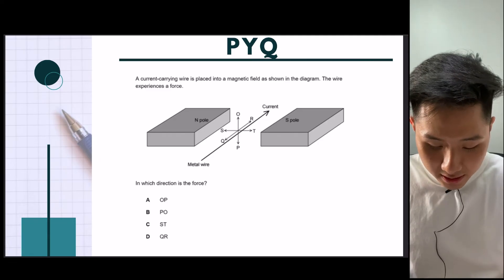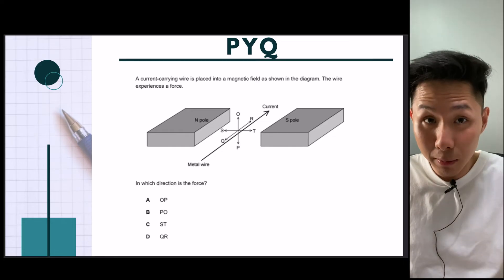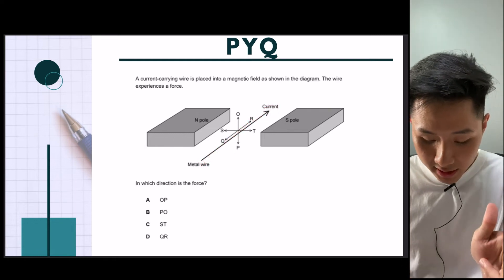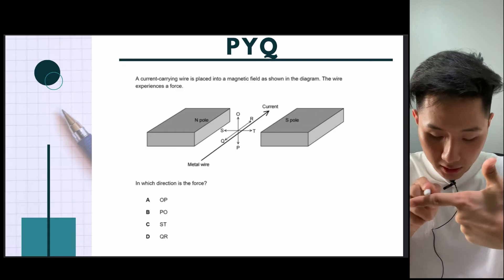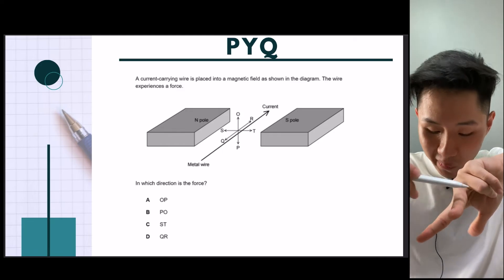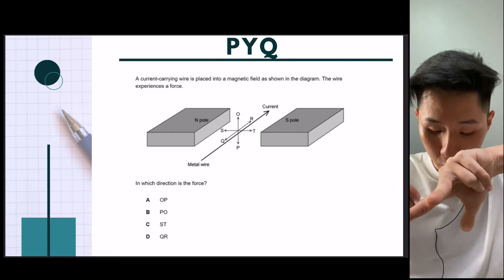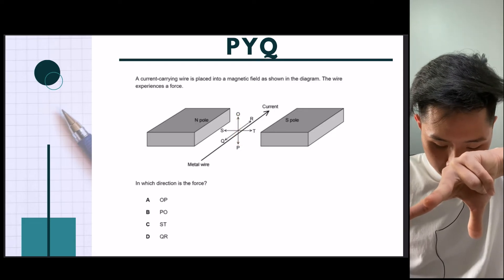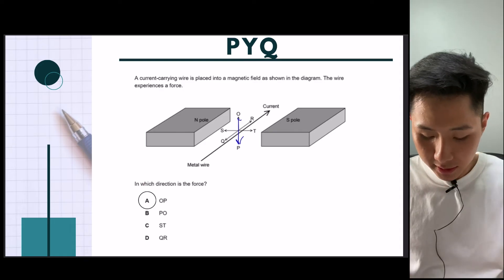The next question: a current-carrying wire is placed in a magnetic field and the wire experiences a force. Again it's a similar question, with the direction of current flowing upward. So if I apply Fleming's left-hand rule — index finger pointing north to south, middle finger pointing toward you — you can see that the thumb is pointing downwards, meaning the force exerted is downward. The answer is A.